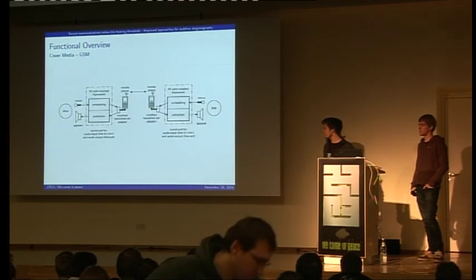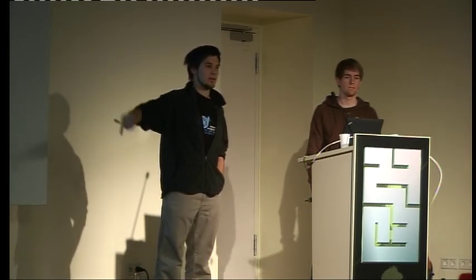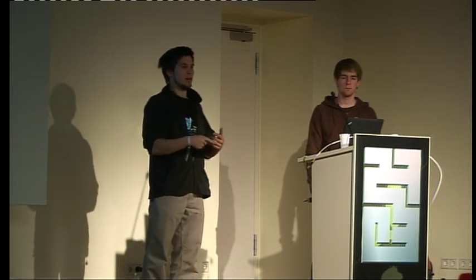For GSM communications the setup is similar: both sides have a receiver, transmitter, and the framework to embed and extract information. Instead of routers, we use mobile phones communicating over the GSM network. We use the computer sound card with a handsfree set plugged in to modify the auditive information before it's handed over to the mobile phone, and to extract secret data from received audio.